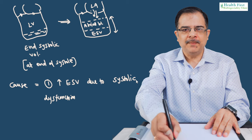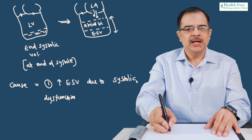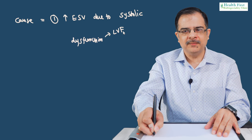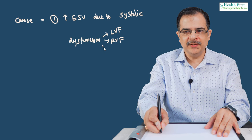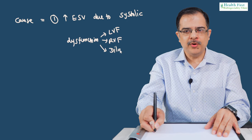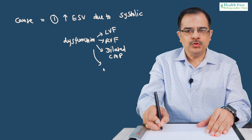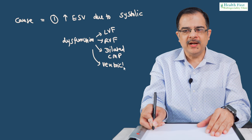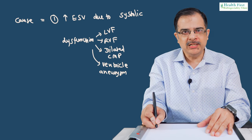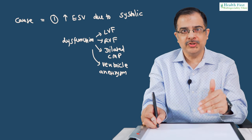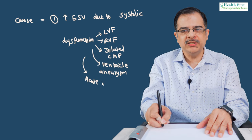Examples of systolic dysfunction include left ventricular failure, which produces a left-sided S3, and right ventricular failure, which produces a right-sided S3. It can also be due to dilated cardiomyopathy, which is characterized by decreased systolic function, ventricular aneurysms — where a part of the ventricle is not contracting and bulges out in systole — and acute MI, where contractions are reduced.